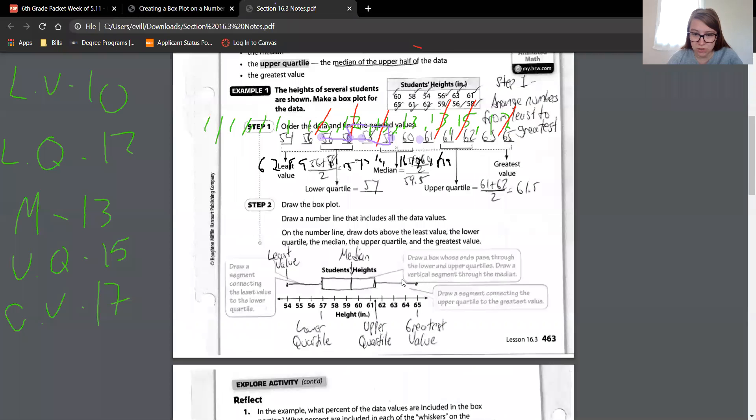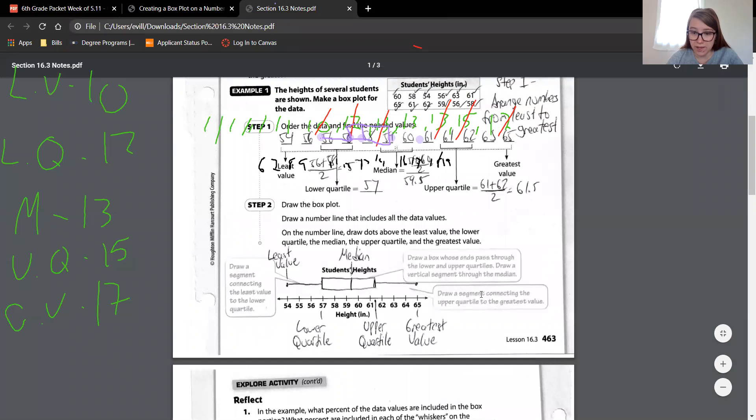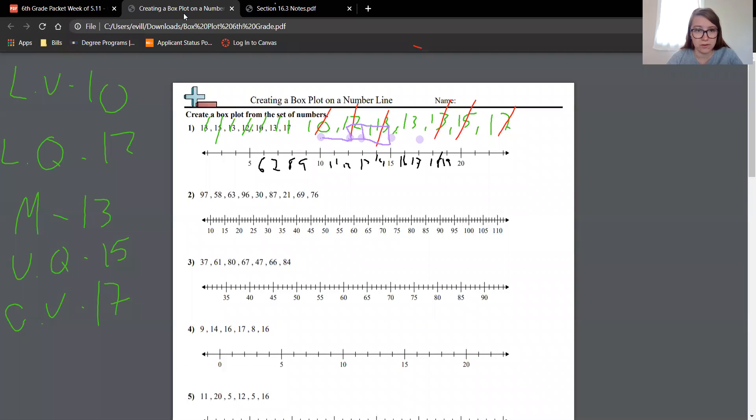Now that we have our box, we need to draw a vertical segment, or as I like to call them, lines through the median. So now we need a line through the median. Our median was 13. And then last but not least, draw a line connecting the upper quartile to the greatest value. All right, upper quartile to the greatest value. I will answer that in a minute when I am done. All right, so I'm just going to do one. If you need any more help, please let me know and I will be happy to help you. Hopefully this explains it though, and you enjoy the rest of your Wednesday.